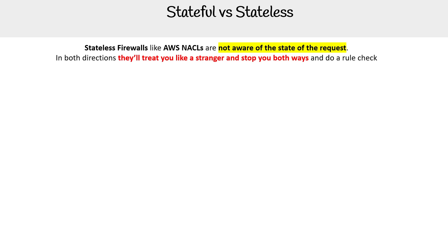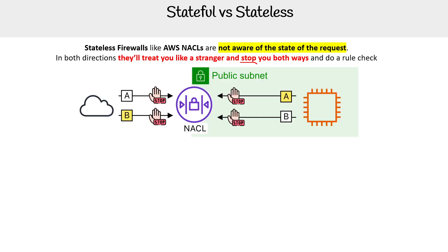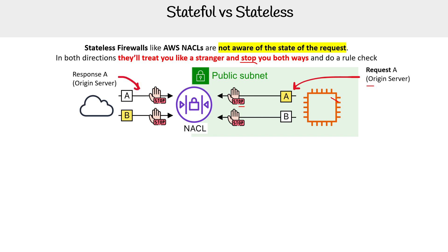When I use the word 'stop,' I mean they will check to either allow or deny — that's not a block, that's just a stop. So we have an EC2 instance that wants to talk out to the internet. It's going to make a request — we'll call this request A — originating from the server, the EC2 instance, the virtual machine. It's going to go over to the NACL, and the NACL is going to say stop: we need to decide whether you're allowed to leave — allow or deny.